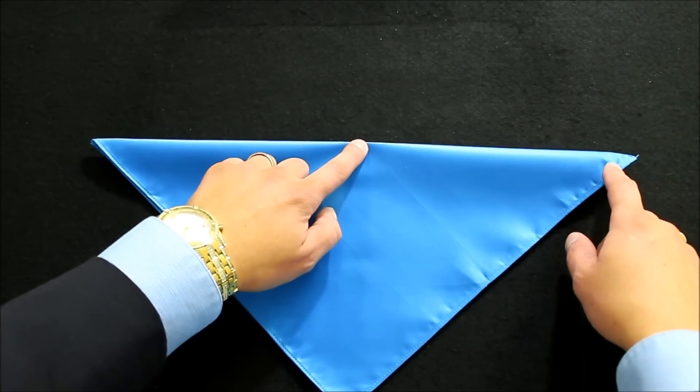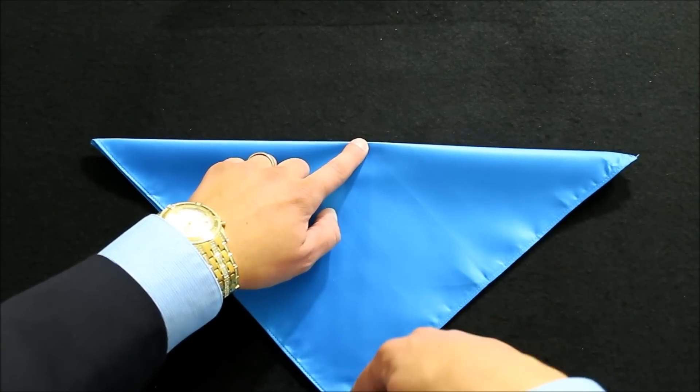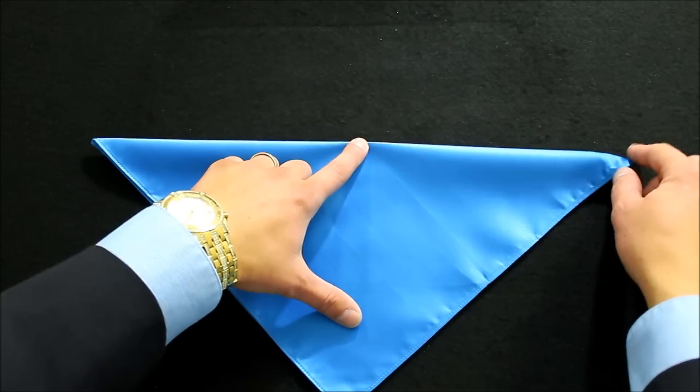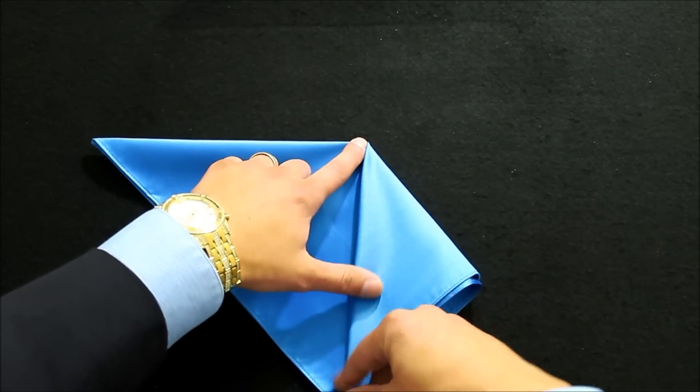This is going to be the top of our pocket square, so directly above the bottom point, we're going to pull in the side corners, pull them down like so.